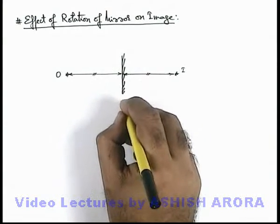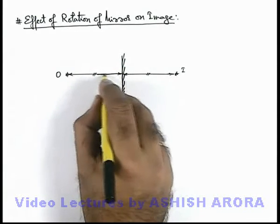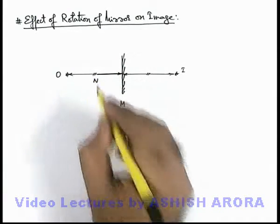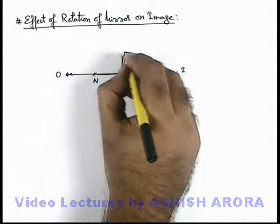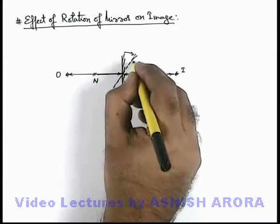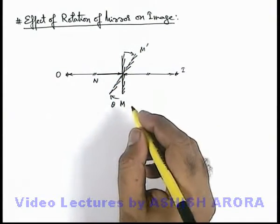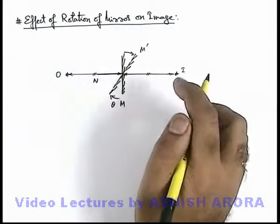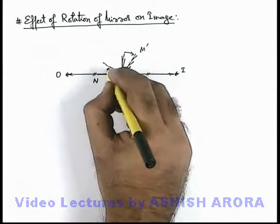Say this mirror is in position M, and this mirror's normal will be in this direction N. If the mirror is rotated clockwise by an angle theta such that the new position of the mirror is M dash, then the mirror's new normal will also be rotated by the same angle theta.